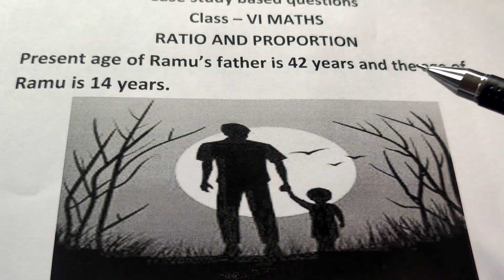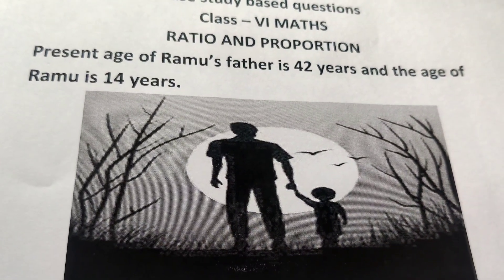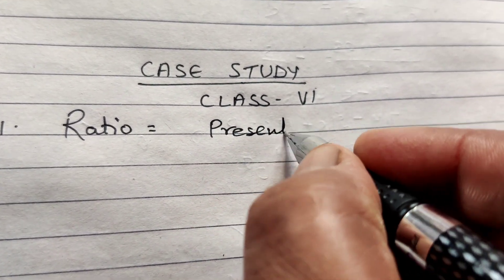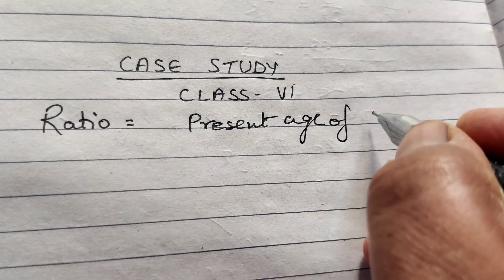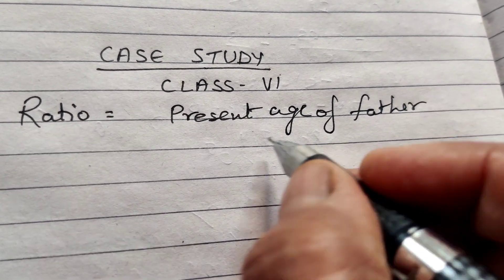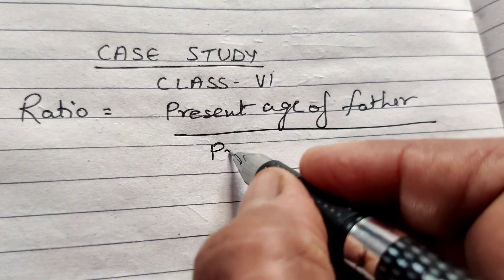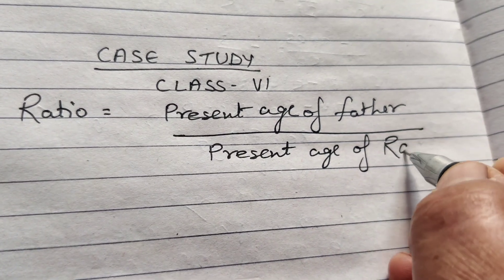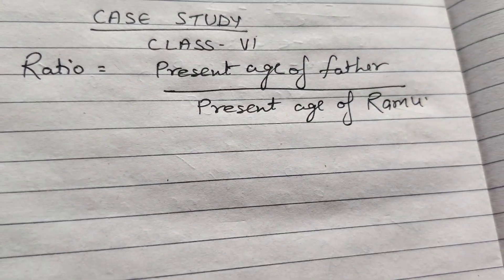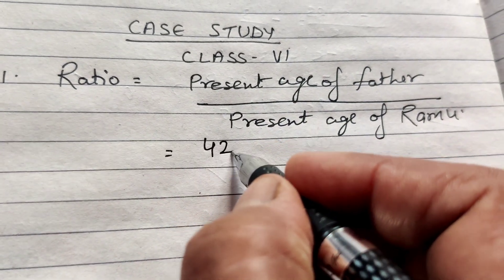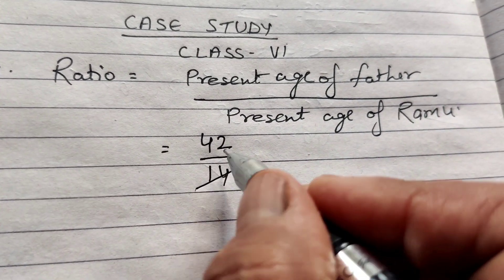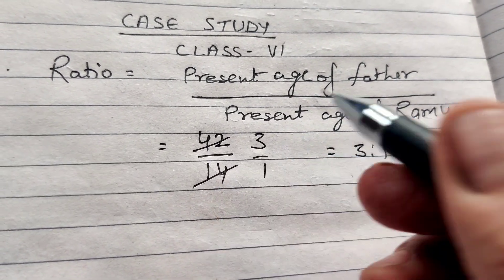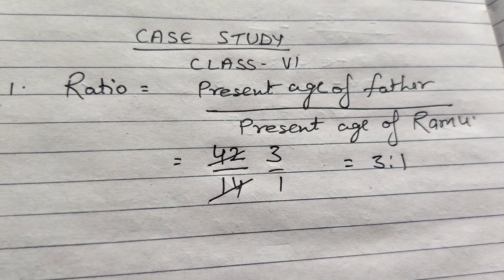The present age of father is 42 and the present age of Ramu is 14. It is given that the present age of father is 42 years and present age of Ramu is 14. We cancel by 14 — 14 into 3 is 42 — so the ratio is 3 is to 1. This is the first answer.